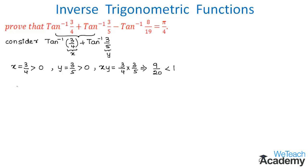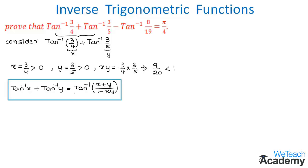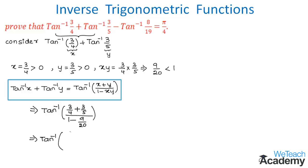Since x·y is less than 1, we can use the formula: tan inverse x plus tan inverse y equals tan inverse of (x + y) divided by (1 minus xy). Applying this, we get tan inverse of (3/4 + 3/5) divided by (1 minus 9/20). Simplifying: the numerator is 15 + 12 = 27, and the denominator is 20 minus 9 = 11, giving tan inverse 27/11.